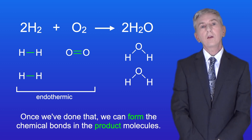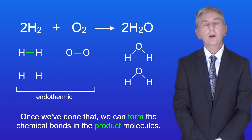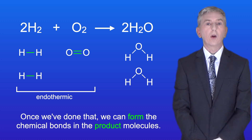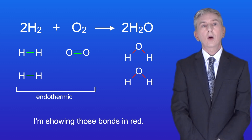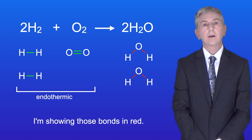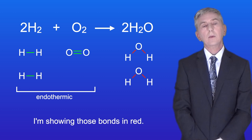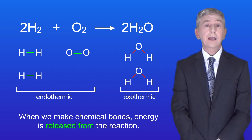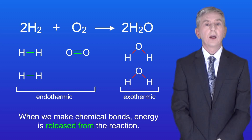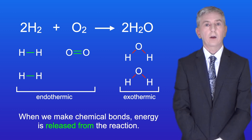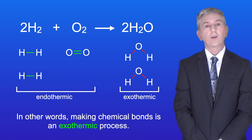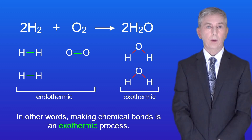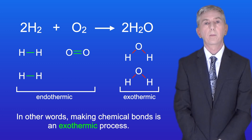Once we've done that we can form the chemical bonds in the product molecules, and I'm showing those bonds in red. When we make chemical bonds, energy is released from the reaction. In other words, making chemical bonds is an exothermic process.